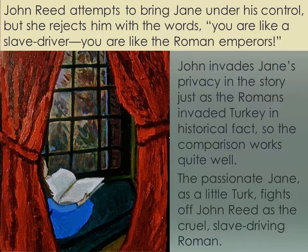The passionate Jane — the little Turk — fights off John Reed, the cruel slave-driving Roman. In historical fact the Romans did attack Turkey, so it fits: just as Rome attacked Turkey, so John Reed attacks little Jane. At this point in the story Jane is like the colonized — the victim of the colonizing invader.